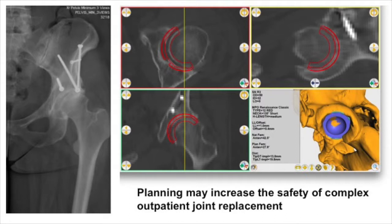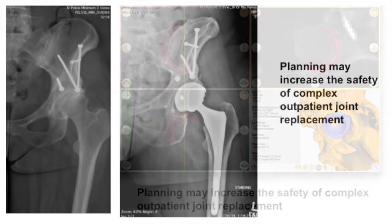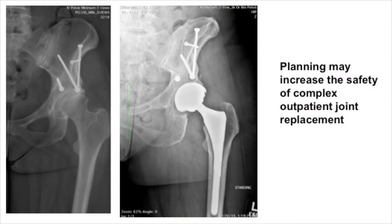With preoperative planning, you can allow yourself to do potentially more complex reconstructions in the outpatient setting. Here's a failed PAO with hardware, and we can be quite convinced that we're not going to encounter hardware removal issues or need specialized equipment. We can do outpatient surgery on patients who have had multiple previous operations.